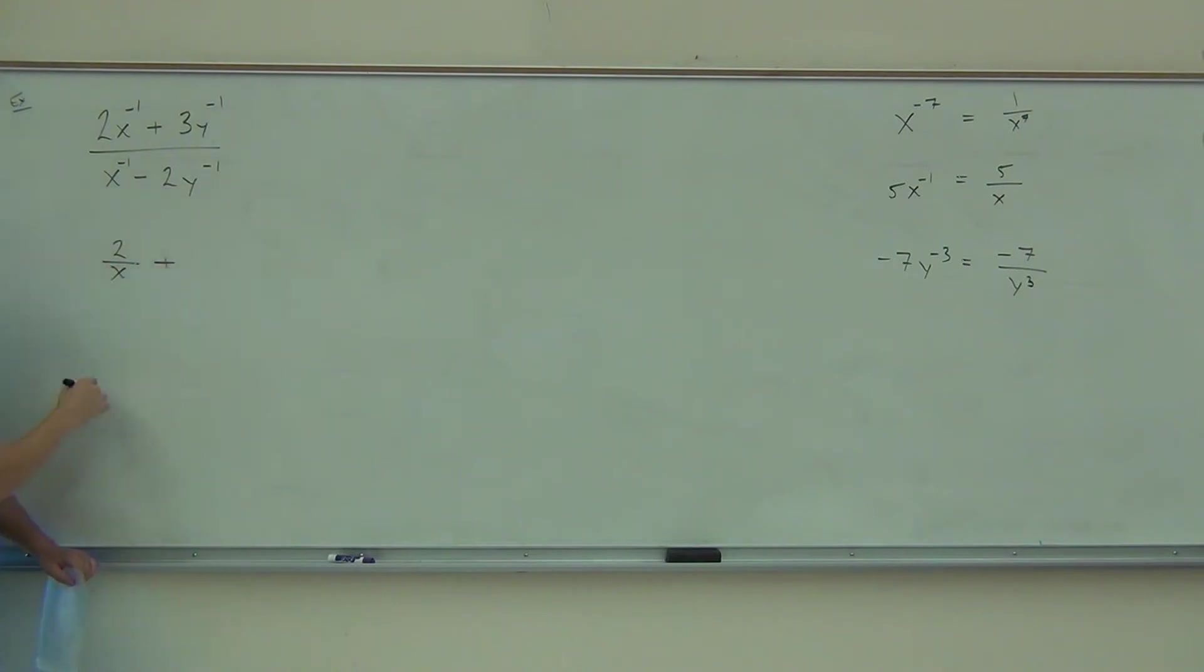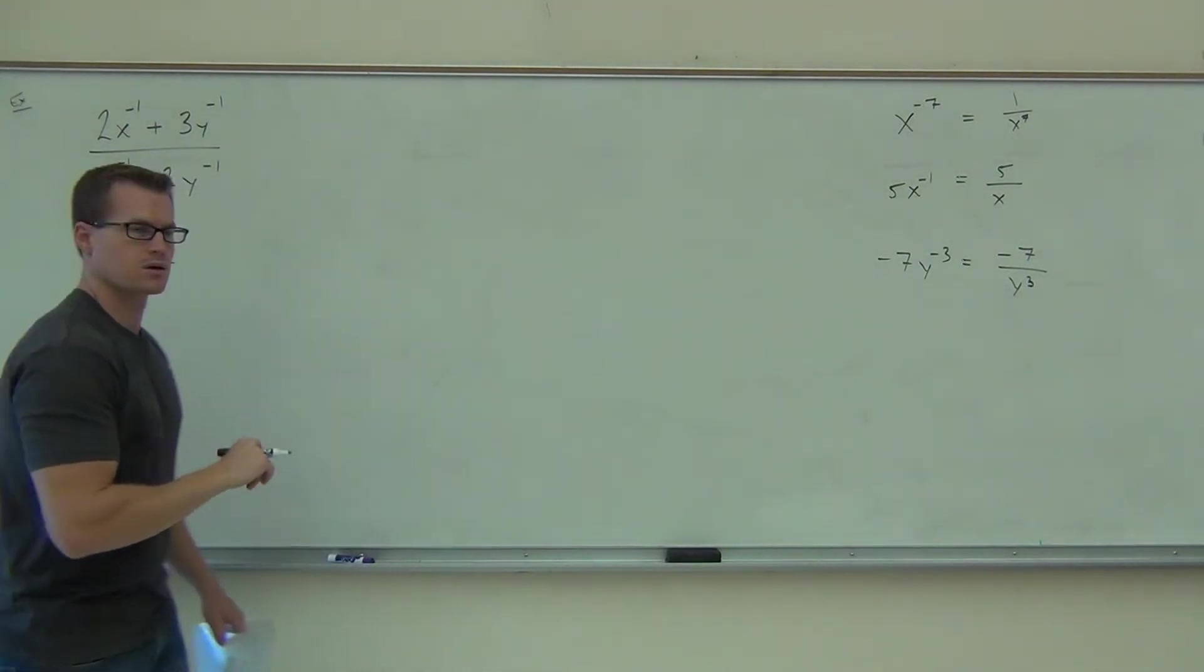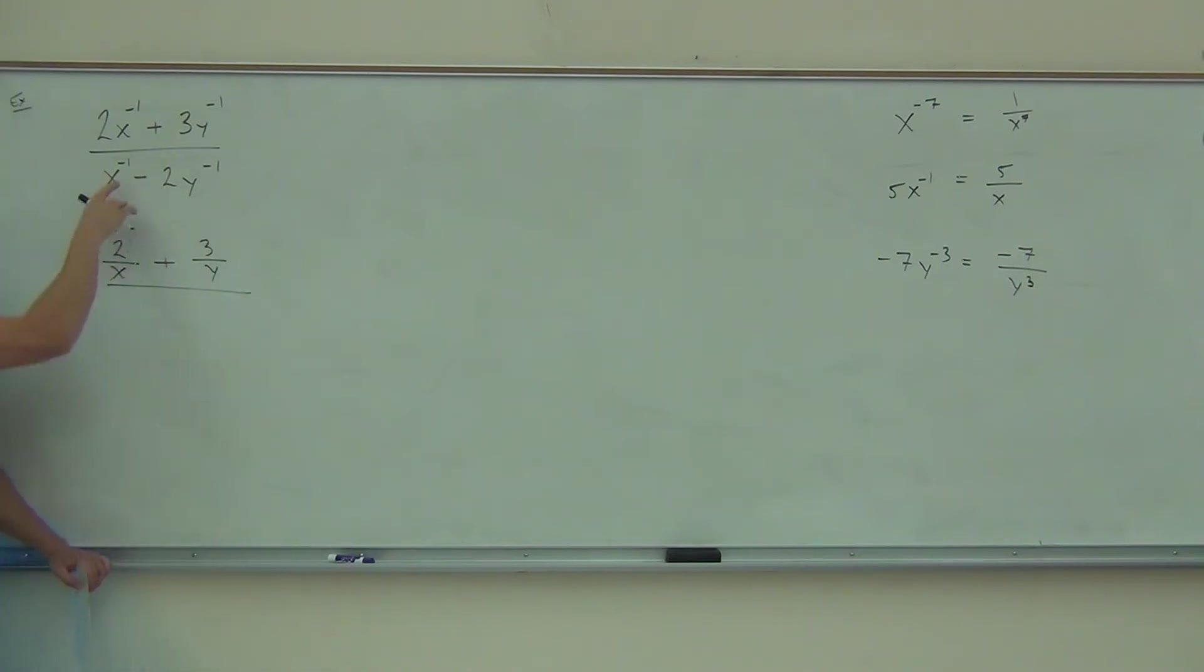Yeah, that's exactly what we did over there. Then we have this plus sign. How about Y, I'm sorry, 3Y to the negative one? 3 over Y. Awesome. All over.